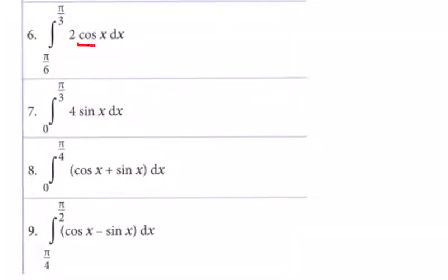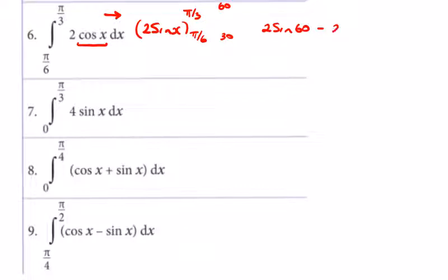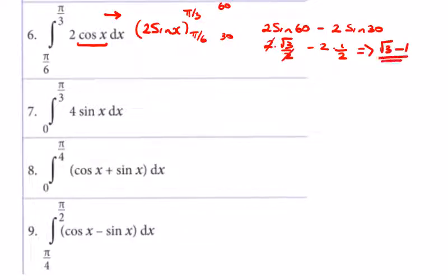Number 6: we're integrating 2cos x, which goes to 2 sin x, between π/3 (60°) and π/6 (30°). So we get twice the sin of 60 minus twice the sin of 30. Sin of 60 is √3/2, so 2 times √3/2 gives √3. Sin of 30 is 1/2, so 2 times 1/2 gives 1. The answer is √3 minus 1 — just leave it like that.